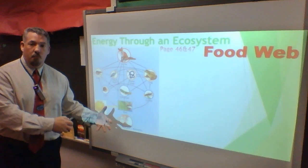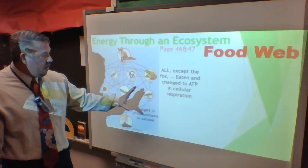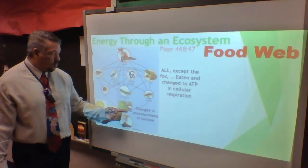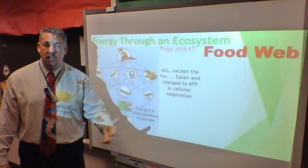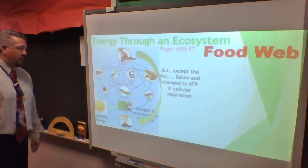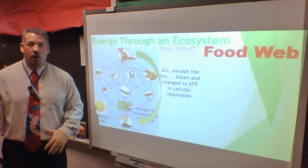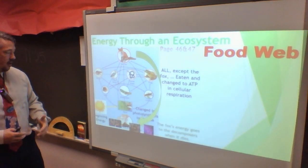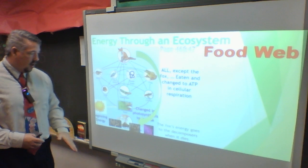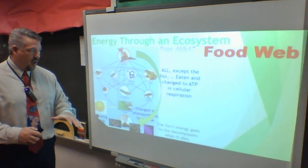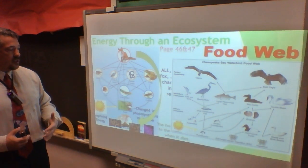To summarize energy flow: photosynthesis produces sucrose, then each consumer level converts it to ATP through cellular respiration. This level and the next transform it into ATP, and so on up the chain. At the top, organisms die, begin to decompose, and all kinds of decomposers take over — fungus, decomposer insects, worms, and bacteria — breaking it all down.